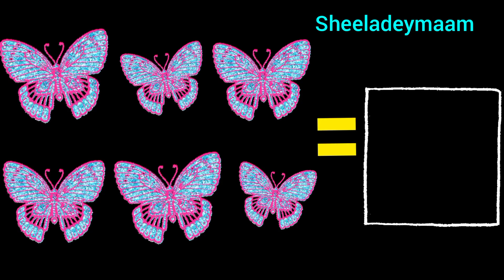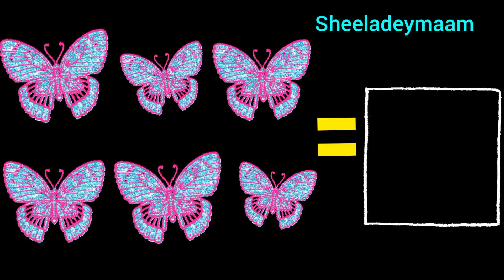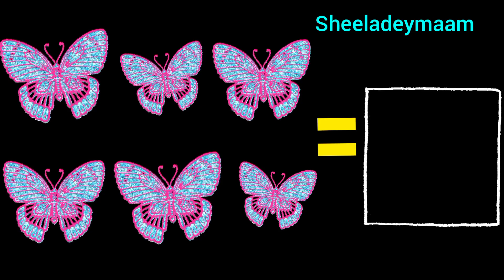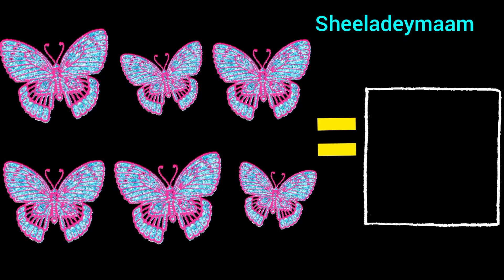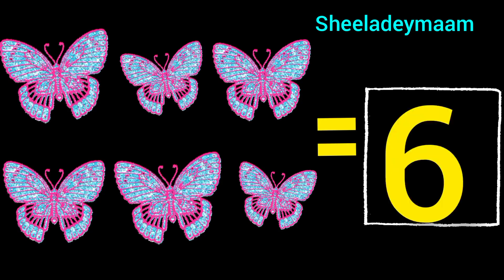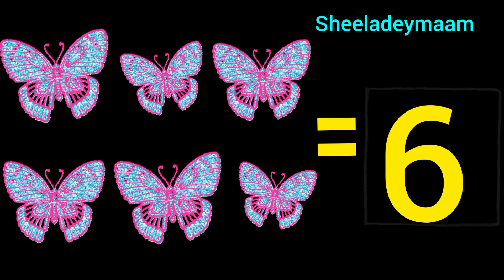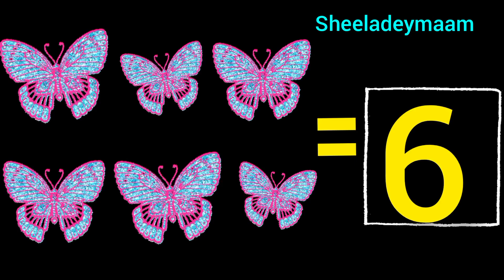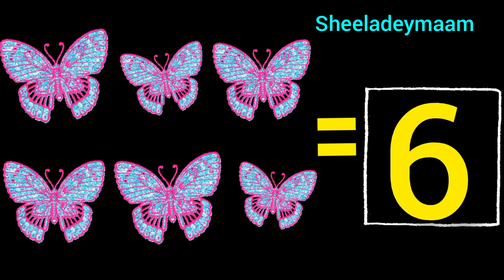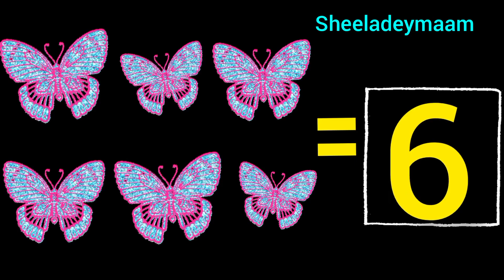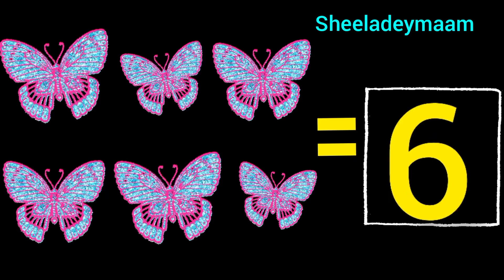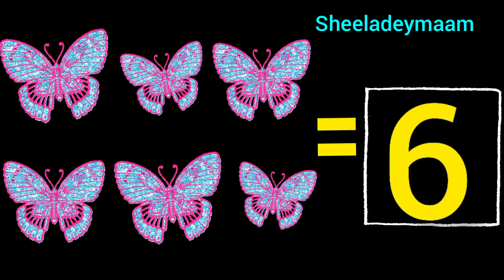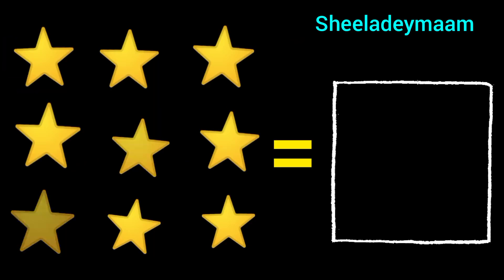There are 6 butterflies. So children, write number 6 in the box. And children, this is number 6.